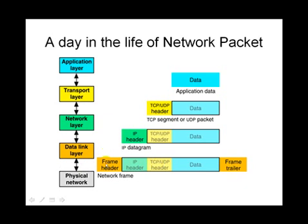As this packet moves up the OSI stack, various headers are stripped by the corresponding layers. The data link layer is going to strip off the ethernet header and push the packet up. Then the network layer strips the IP header and gives just the TCP header and data to the transport layer, which is TCP or UDP depending on the packet. The transport layer once again strips the TCP/UDP header and just passes the data up to the application layer. As we can see, as a packet traverses up the network stack, useful information in the headers is totally lost, and what the final application receives is just the data meant for it.